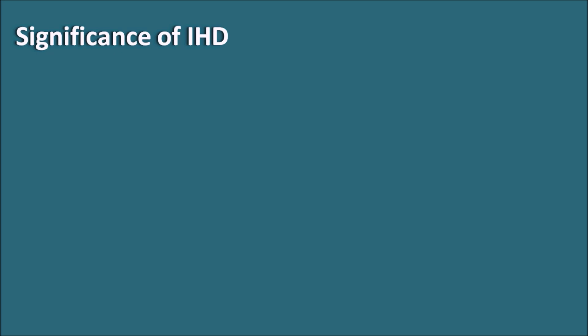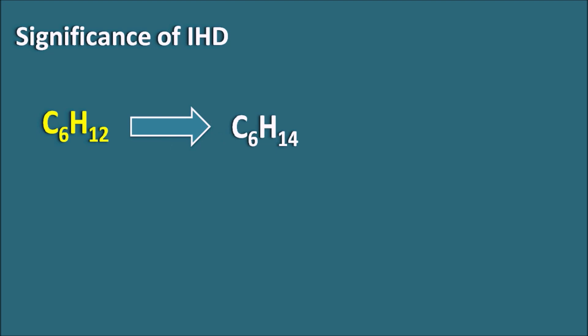IHD is more important when we are going to identify the structure of unknown compounds with a known molecular formula. For example, we have a compound with molecular formula C6H12. What is the structure of this compound? This can be identified by taking the IHD value. If we compare this compound with the saturated compound C6H14, then it has 2 fewer hydrogens. So the IHD value will be 2 divided by 2, which is equal to 1.